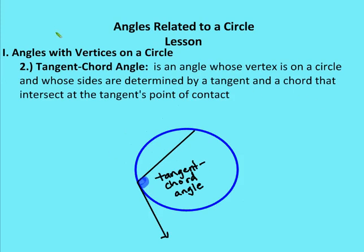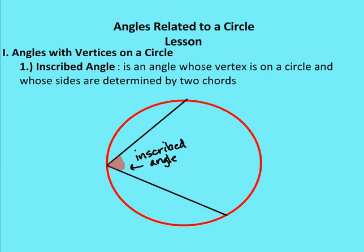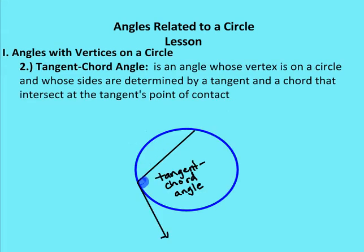The second type of angle that has a vertex on the circle is called a tangent-chord angle. The vertex, again, is on the circle. You can see the tangent line here and the chord here — the angle formed is this blue area. A tangent-chord angle is an angle whose vertex is on a circle and whose sides are determined by a tangent and a chord that intersect at the tangent's point of contact.